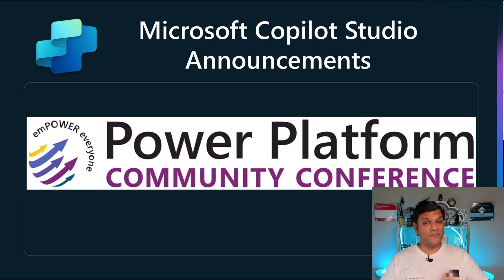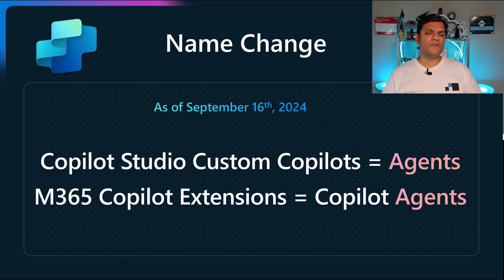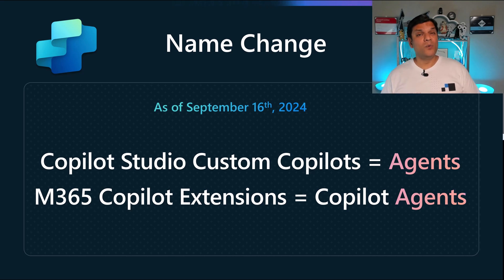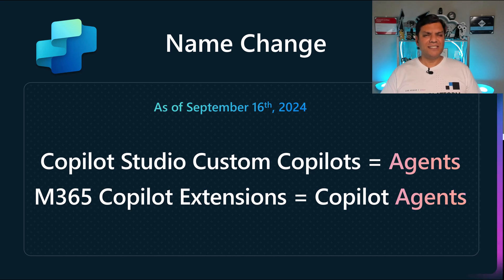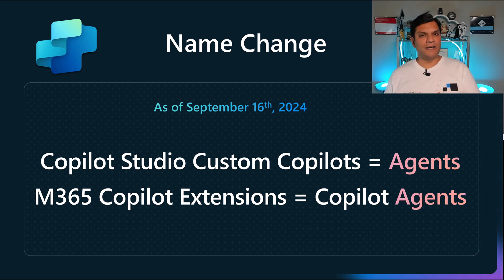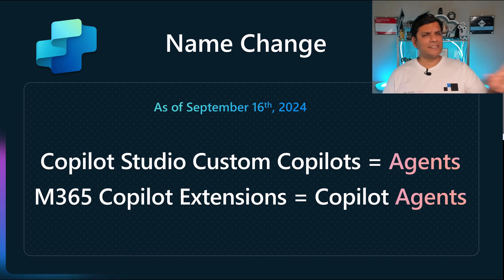What I'm going to focus on is specifically the Copilot Studio announcements. But first, let's talk about the name change. As of September 16th of 2024, the name which we called Copilot Studio Custom Copilots is now going to be called agents. Also, Microsoft 365 Copilot Extensions is going to be called Copilot Extensions. Remember, once upon a time we used to call them chatbots, but chatbots became copilots. Well, now these copilots are going to be called agents. This is the official terminology and the name change took effect September 16th of 2024.